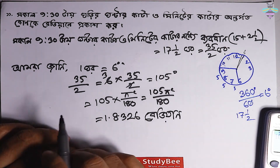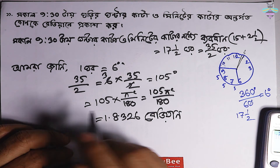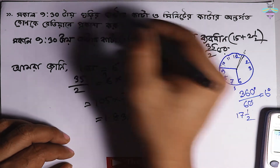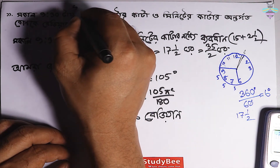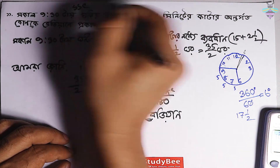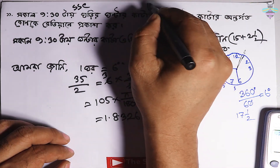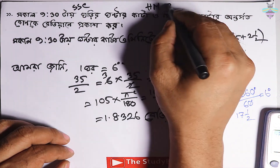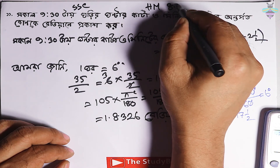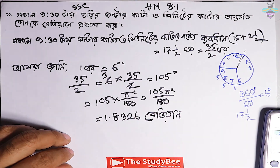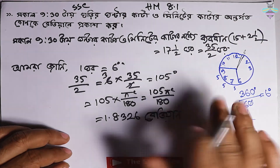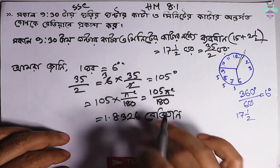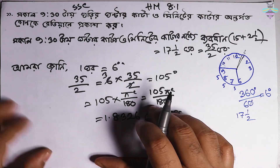11 প্রশ্নো জানো উত্তর এটা ছিলো হচ্ছে এসেছি লেবেলের হায়ার মান 8.18। এগার প্রশ্নো আসগরি হায় ইপউসে দাকর Kothana।